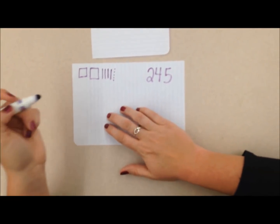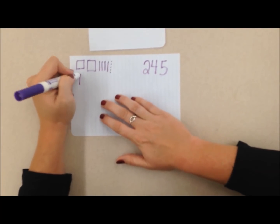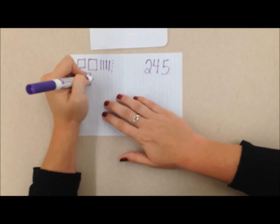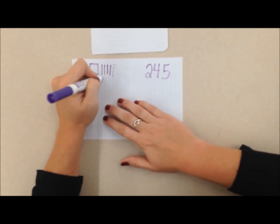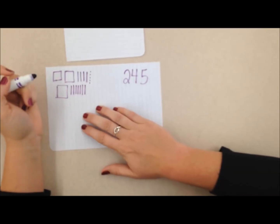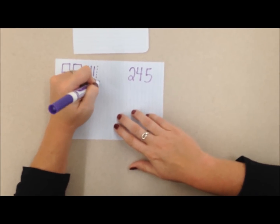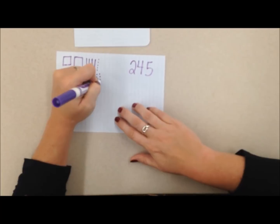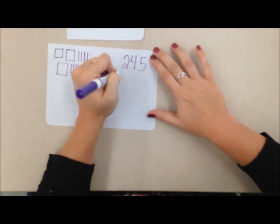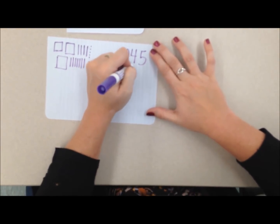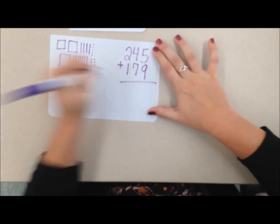He's adding 179 to that. So that's 100, seven tens, one, two, three, four, five, six, seven tens, nine ones. One, two, three, four, five, six, seven, eight, nine ones. So I'm going to add 100, seven tens, nine ones.